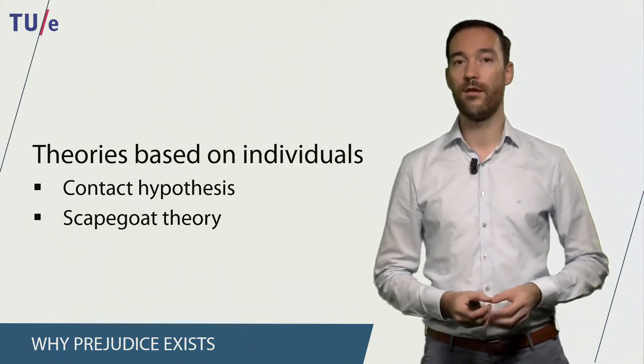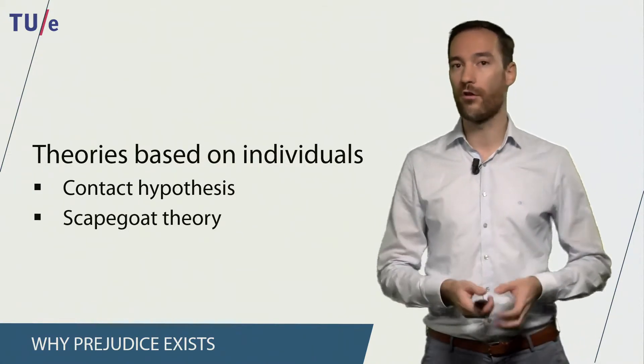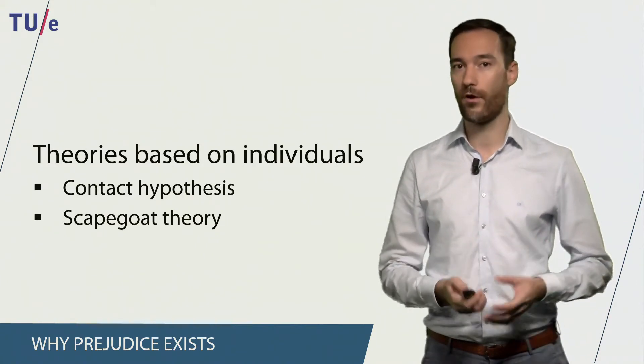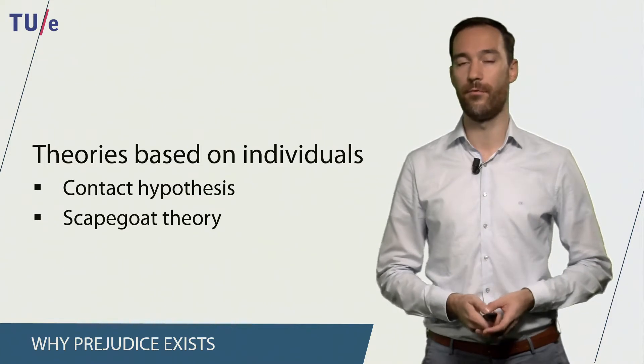Scapegoat theory states that we tend to blame problems on others, and therefore we try to find a scapegoat which makes it more likely that we are prejudiced against people from different groups.